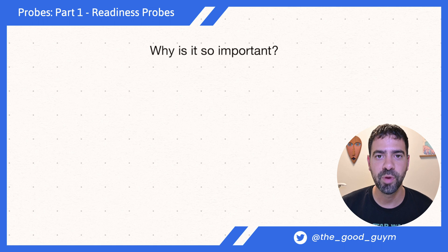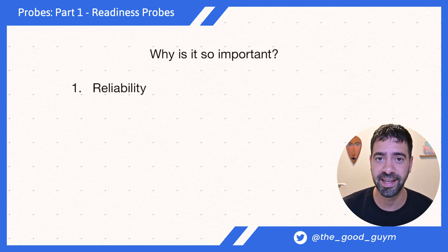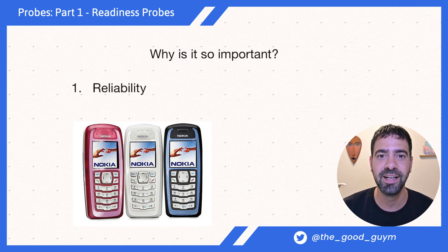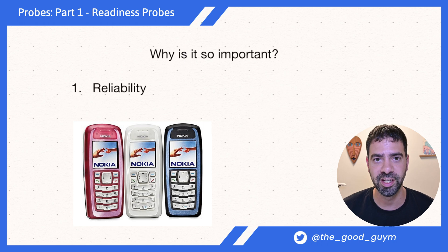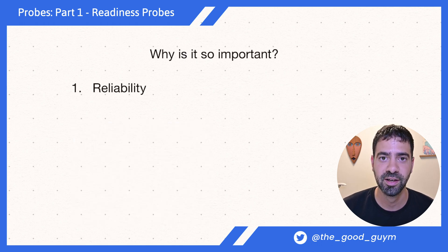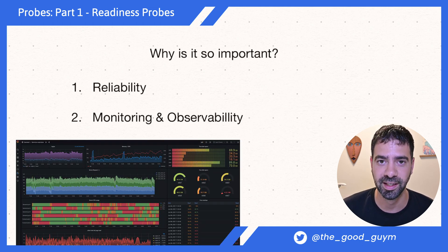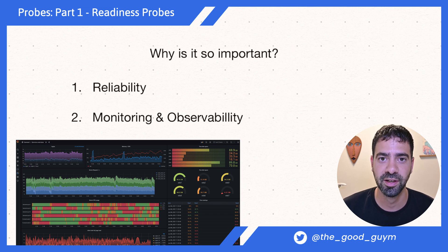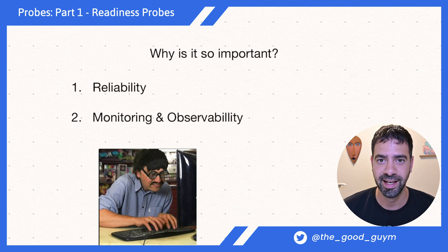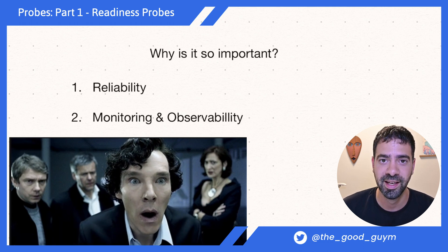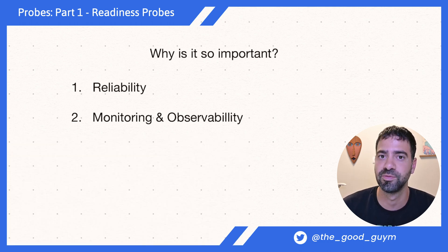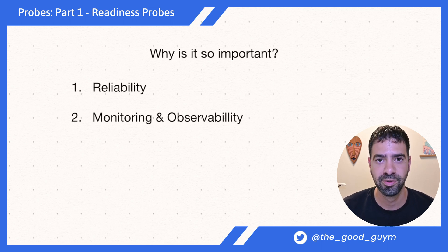So why is it so important to use readiness probes to reflect your application status? The first thing is obviously reliability — by using Kubernetes automations and actually reflecting our application status, Kubernetes helps us be more reliable. The second thing is monitoring and observability. When all of your pods are not ready, something is wrong with your application. You want to get an alert and act as fast as you can. When you look at your observability dashboard and see all pods down for a specific deployment, you immediately need to find out what's wrong. It benefits us in reliability, security, and helps us find issues faster.